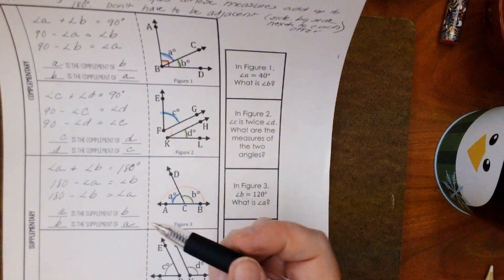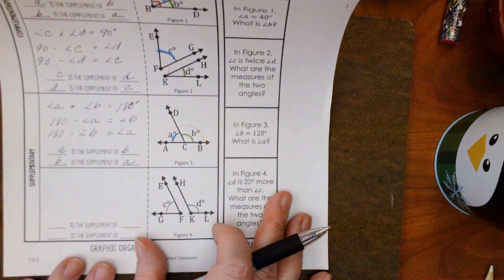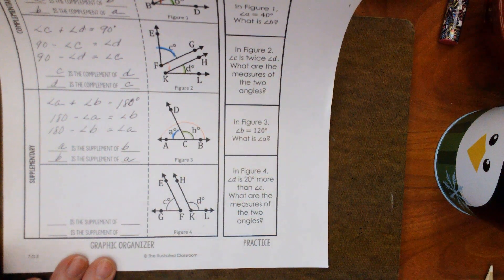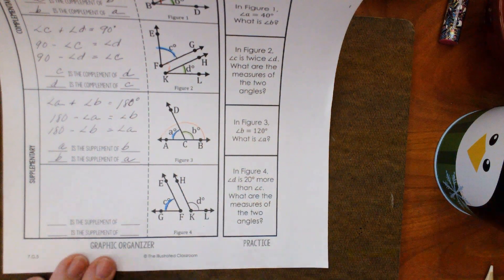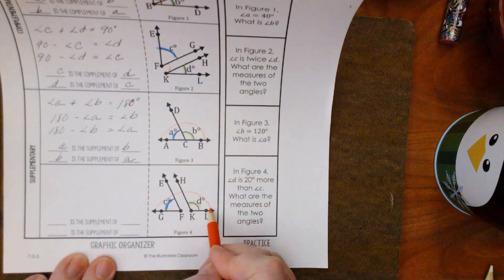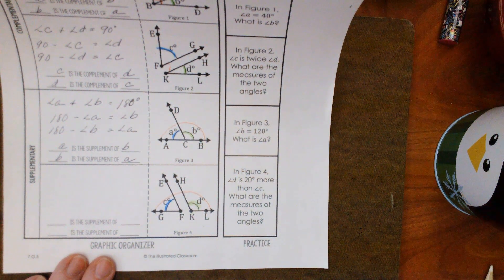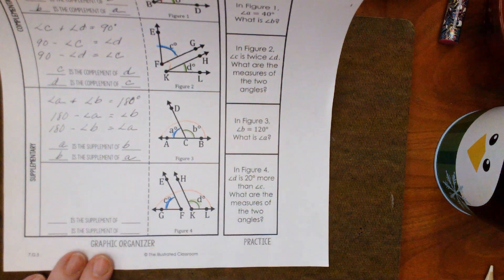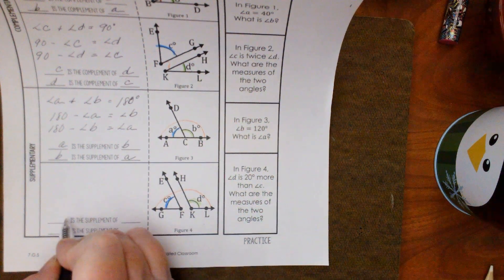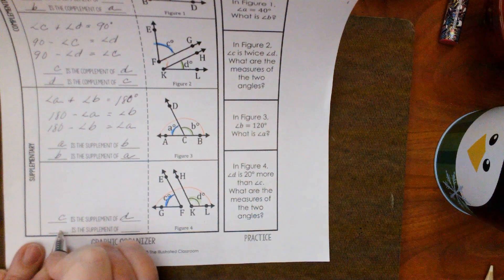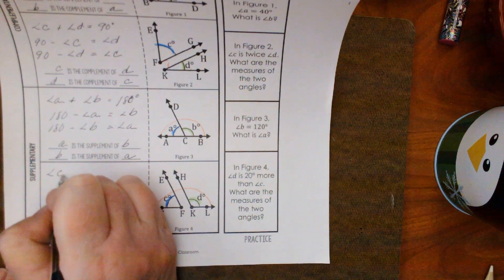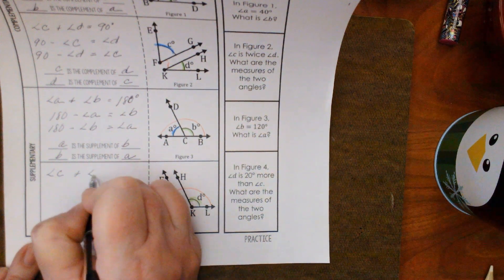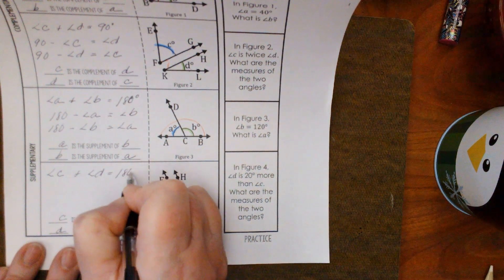Now the next one — again, these are adjacent. So angle C and angle D — if we were to combine them, it would be 180. So C is the supplement of D, and D is the supplement of C. So the angle of C plus the angle of D equals 180 degrees.